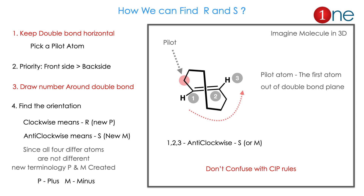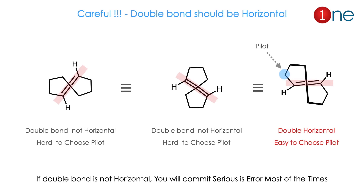Here is an example. Imagine the cycloalkene molecule in 3D. First pick the pilot atom — the front bond pilot atom is highlighted in red. Start numbering from the pilot: one, two, three. If the sequence goes anti-clockwise, you assign S or M — M stands for minus. An important note: don't confuse this with CIP rules. Here we always look at the pilot atom and the continuous numbering. Also remember: the double bond should be horizontal or linear — this makes it easy to choose the pilot.